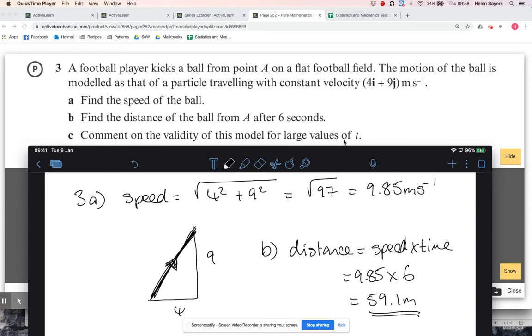And then comment on the validity of this model for large values of T. Okay, so this type of question comes up a lot, you know, not just in vectors, but in any sort of real-life question. And it's just unlikely, well, unlikely slash impossible, that the ball will travel with that constant velocity over a large period of time.